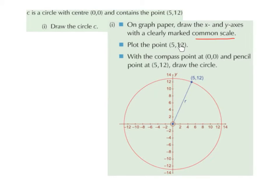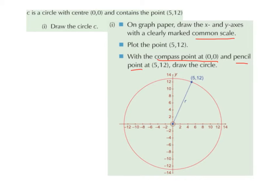Next, we plot the point (5, 12). We go to 5 on the x-axis and 12 on the y-axis and plot the point. Then, with the compass point at the origin (0, 0) and the pencil point at (5, 12), we rotate the compass all the way around until we get back to the original point to draw the circle.